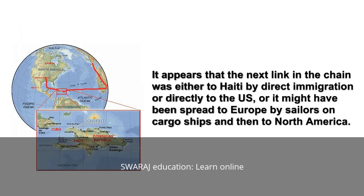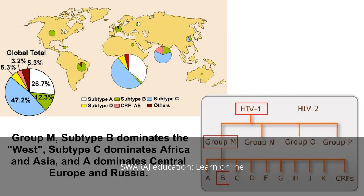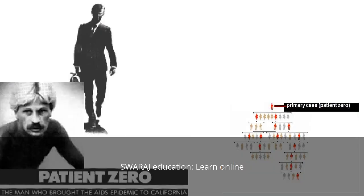It appears that the next link in the chain was either to Haiti by direct immigration, or directly to the U.S., or it might have been spread to Europe by sailors on cargo ships and then to North America. The data is a bit spotty, but the emergence in the major cities of Europe was slightly after the disease was documented in New York and San Francisco. Asia and Russia may have been infected by a second wave of emergence, as their subtype profiles are markedly different than the European and North American subtypes. South America, Australia, and Northwest Asia are a possible third wave emergence. The popularized idea of the Canadian flight attendant as patient zero is very misleading. He was certainly not the first case outside of Africa, or in North America, but he was the index case in a large cluster of 248 patients in 1983.